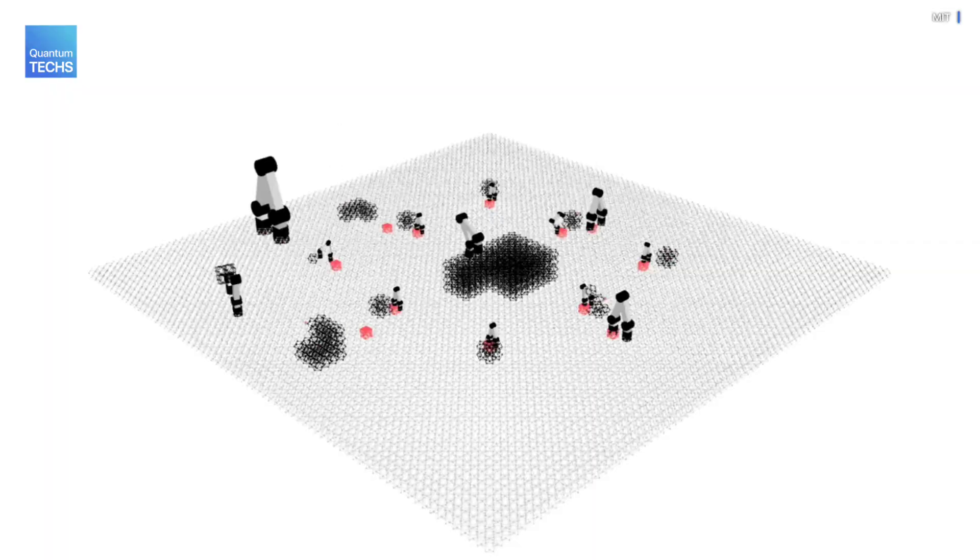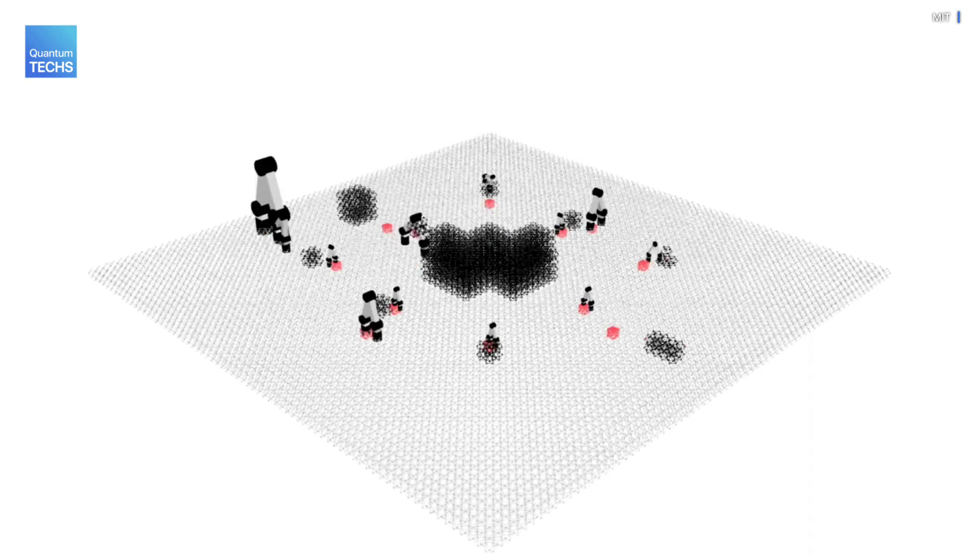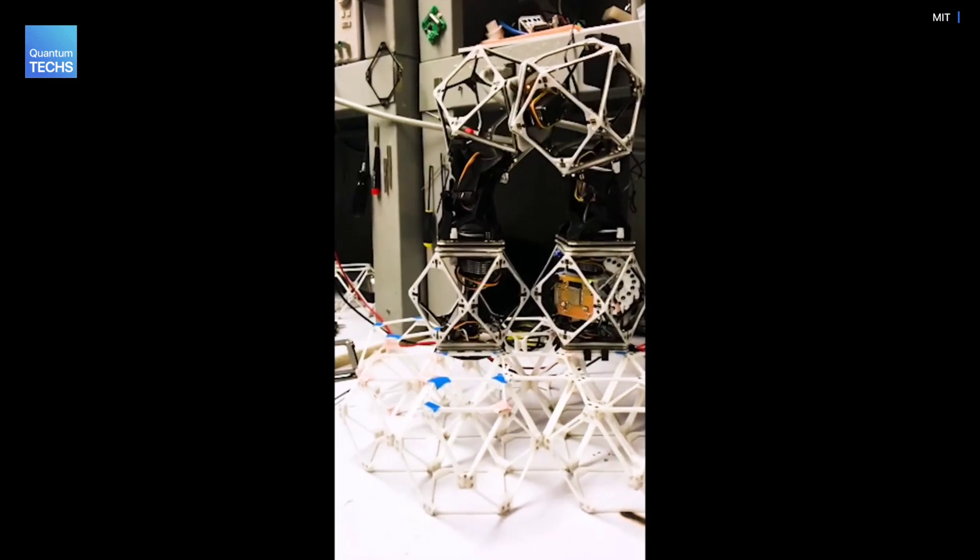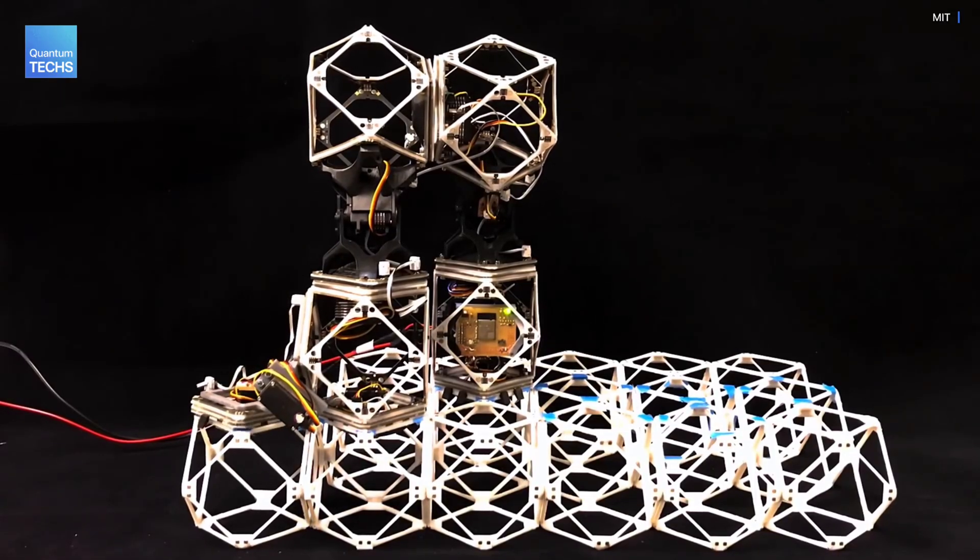This could enable the building of structures that can not only bear loads, but also carry out work such as lifting, moving, and manipulating materials including the voxels themselves. The robots themselves consist of strings of several voxels joined end to end.